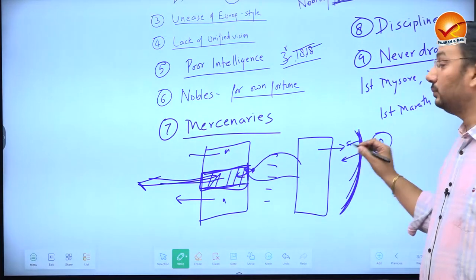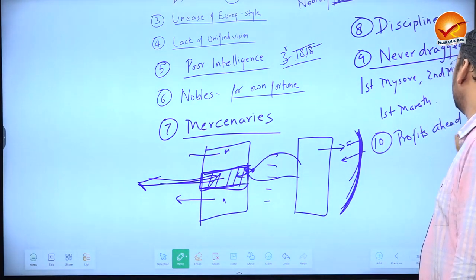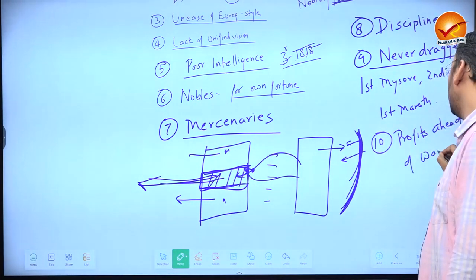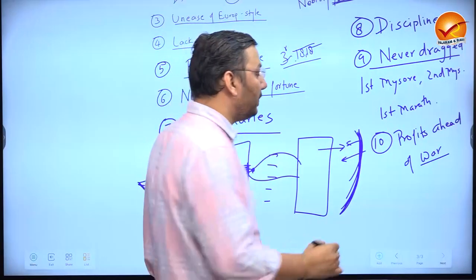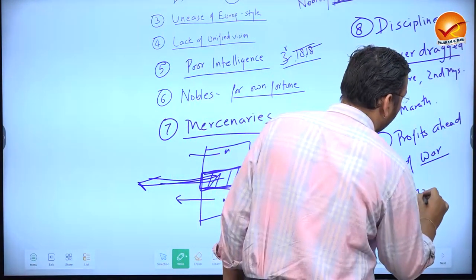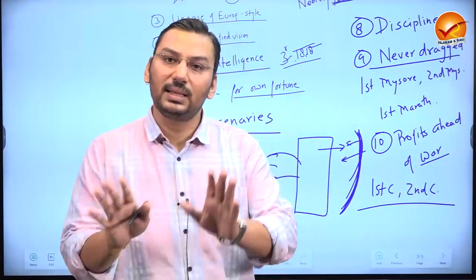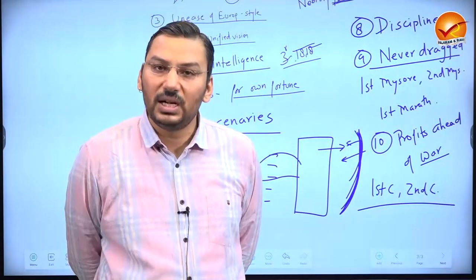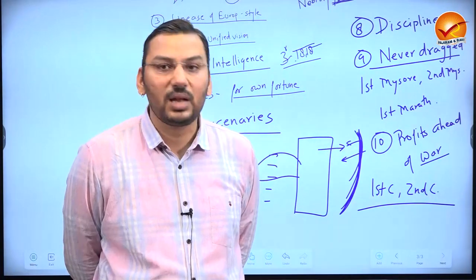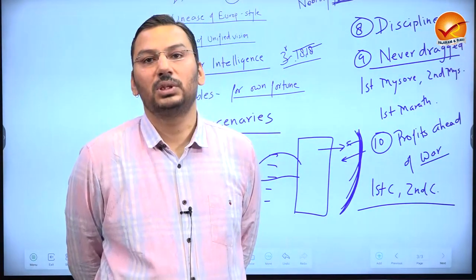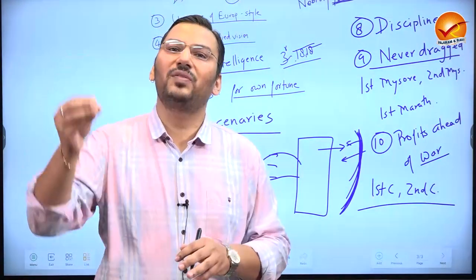Tenth: the British always kept profit ahead of war. They fought only when war was sustainable and profitable. When they thought war would not be profitable, they ended it — even at a disadvantage — in the First and Second Carnatic Wars against the French. After Plassey they did not take all of Bengal immediately; after Buxar they did not take Awadh, intelligently reasoning: who would fight the Afghans directly? Rohilkhand regularly invited Afghans, so Lord Clive in 1765 consciously decided to return Awadh.